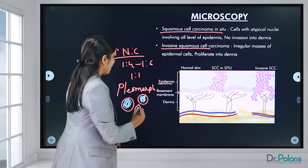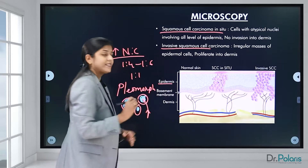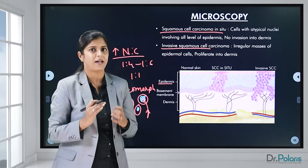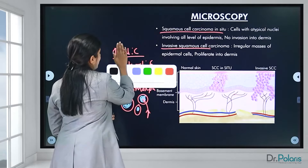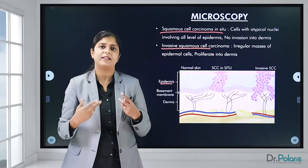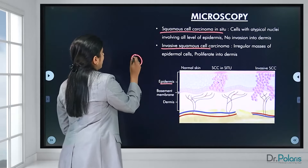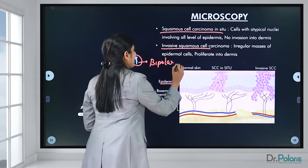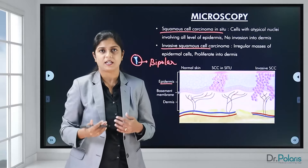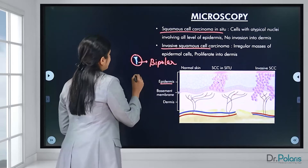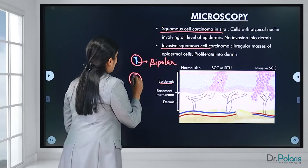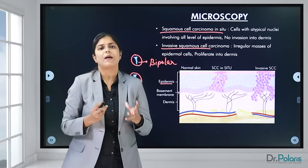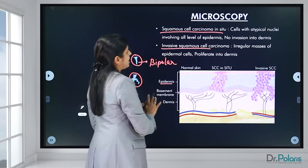Another feature of malignancy is the presence of abnormal mitosis. Normally, mitosis is bipolar, resembling a caterpillar shape. But in malignancy, apart from normal bipolar mitosis, we also see abnormal multipolar mitosis. Presence of abnormal mitosis is a feature of malignancy, and all these features will be seen in squamous cell carcinomas.